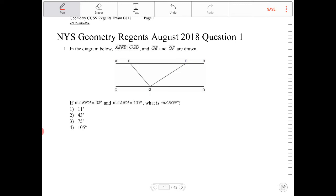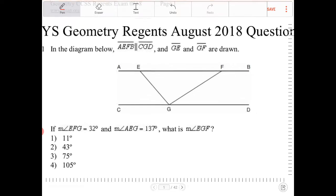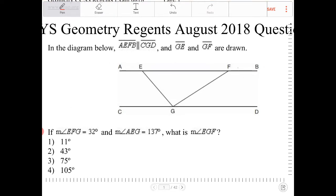If angle EFG is 32 degrees, so let's label that, and also let's label the two lines as being parallel. So these two lines are parallel. EFG is 32 degrees, and AEG is 137, so this is 137. Okay, what is angle EGF? EGF, so that's this angle here.